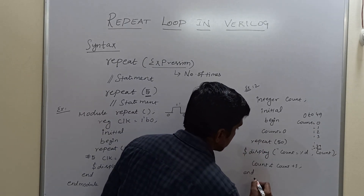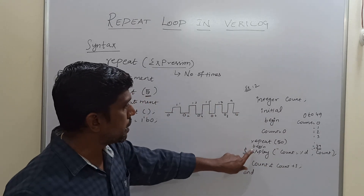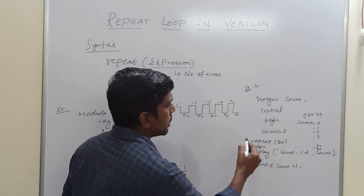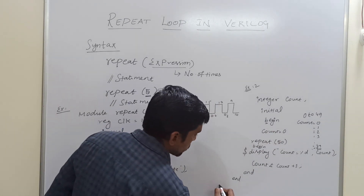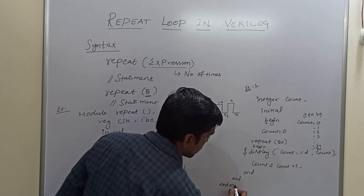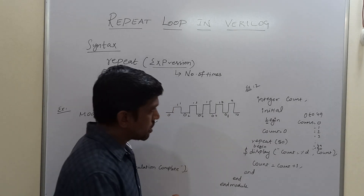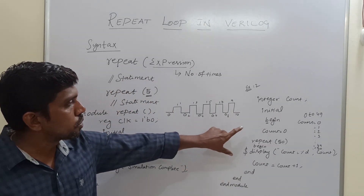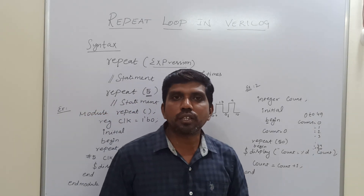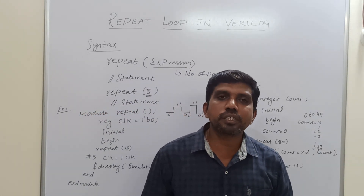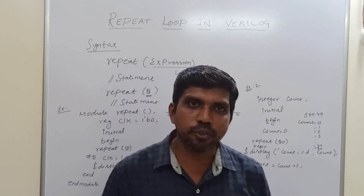Here we use the end statement. Before that, use begin and close it with end. This begin closes with end, and the outer begin closes with the end statement. The final one is end module. This is the simple example to count the value from 0 to 49 using repeat loop. I hope you understand the concept well. If you are watching my video for the first time, kindly subscribe and support us to make more videos. Thanks for watching my channel. Thank you.